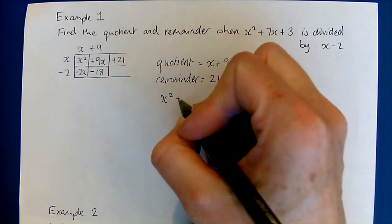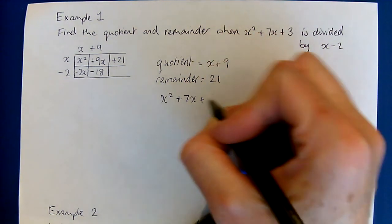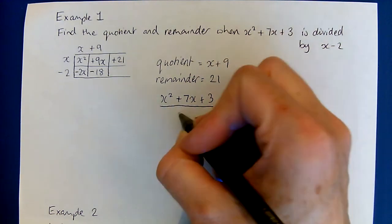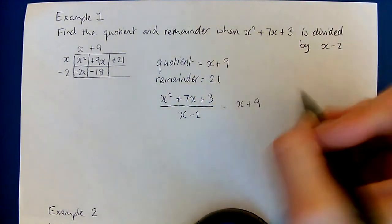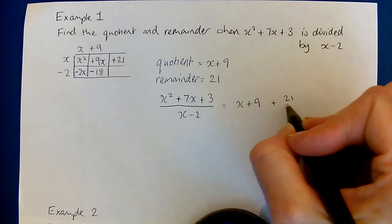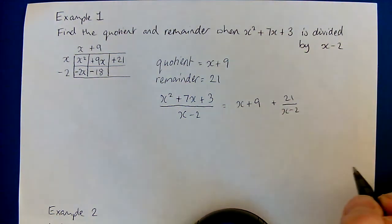If we wanted to, we could write our calculation as x squared plus 7x plus 3 over x minus 2 will give us x plus 9 and then we've got a 21 out of x minus 2 left.